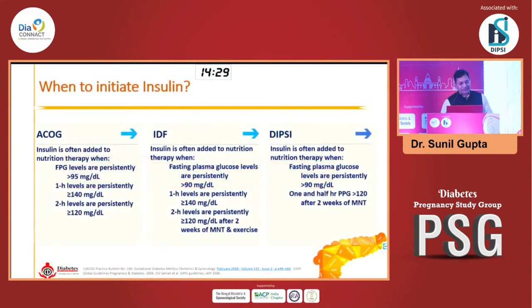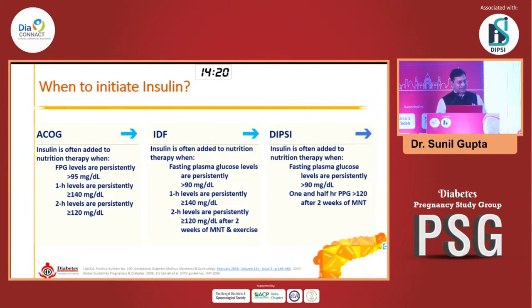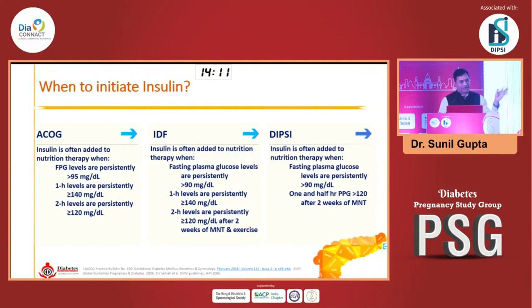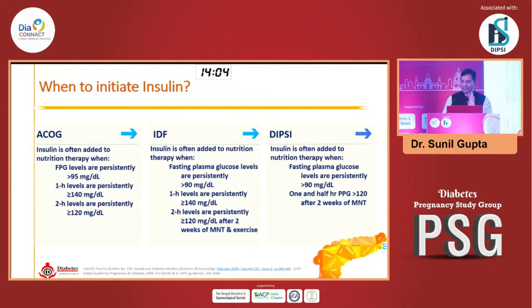When do you initiate insulin? ACOG says fasting 95, and postprandial 140 to 120. We should stick to one figure rather than confusing people. Most of us follow fasting and two-hour postprandial. For type 1, type 2, and all other patients including intraoperative and postoperative period — just stick to one target. So we say fasting 90 and two-hour 120. DIPSI also says 90 and 120.